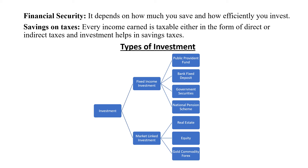There are various investment alternatives available to an Indian investor. Investment can be fixed income investment or market-linked investment. Fixed income investment has very low risk and lower returns — examples include public provident fund, bank deposits, government securities, national pension schemes, bonds, and debentures. Market-linked investment has high risk and high returns — examples include real estate, equity, gold, commodity, and forex.